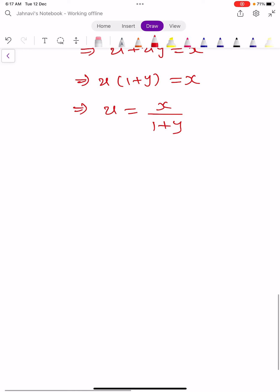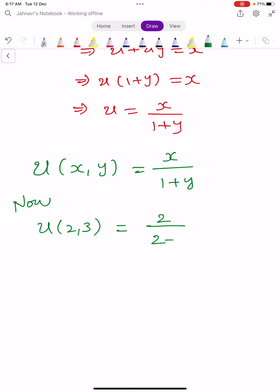This is u(x,y) = x/(1+y). Now, the question is u(2,3), which equals 2/(1+3) = 2/4 = 1/2.